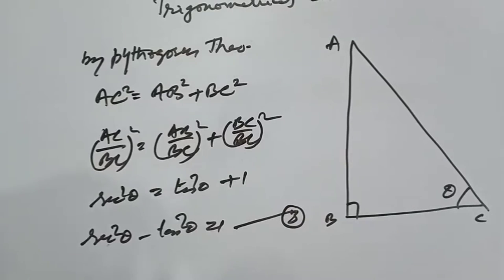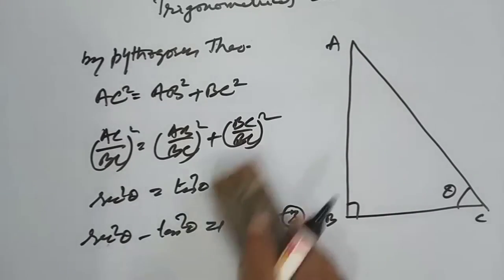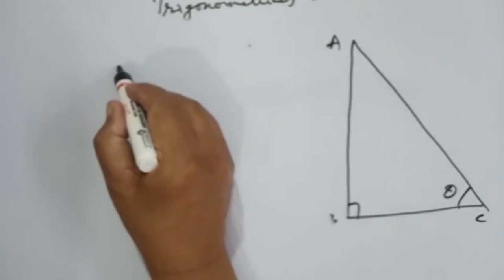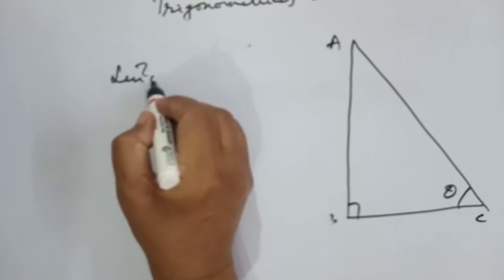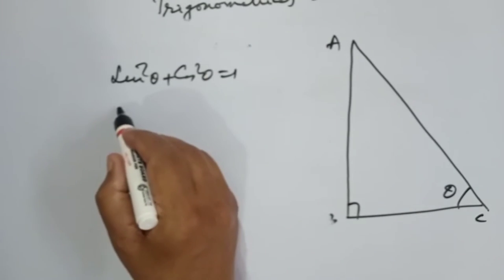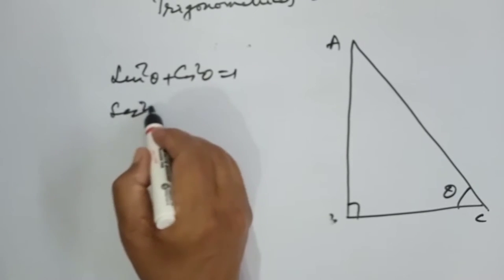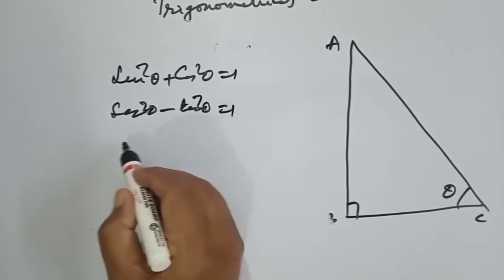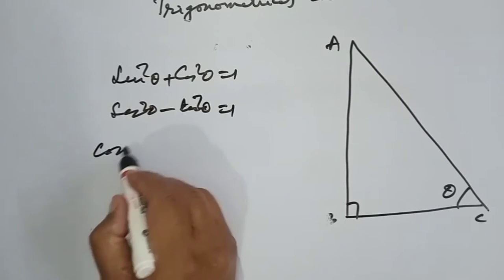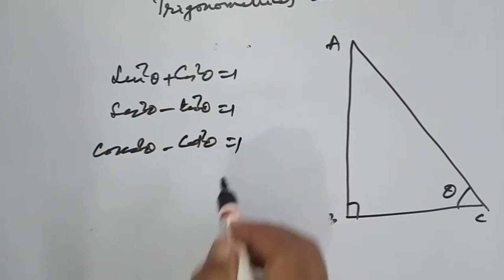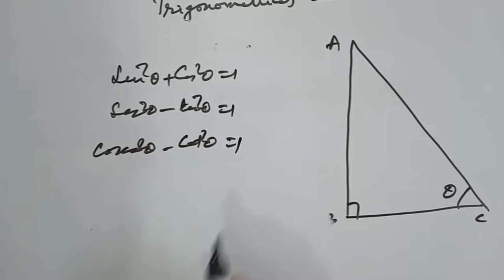So we have proved the three identities. The first is sin squared theta plus cos squared theta is equal to 1. The second is sec squared theta minus tan squared theta is equal to 1. The third is cosec squared theta minus cot squared theta is equal to 1.